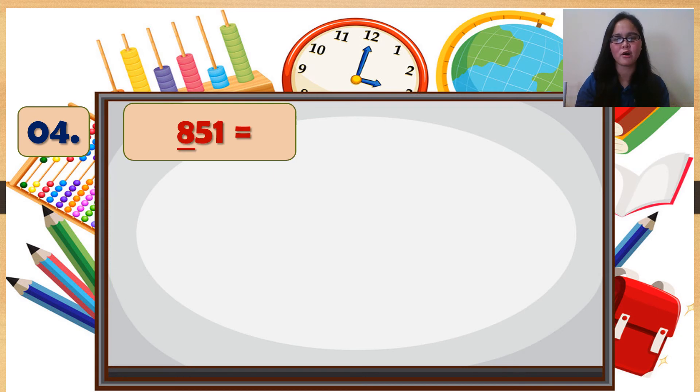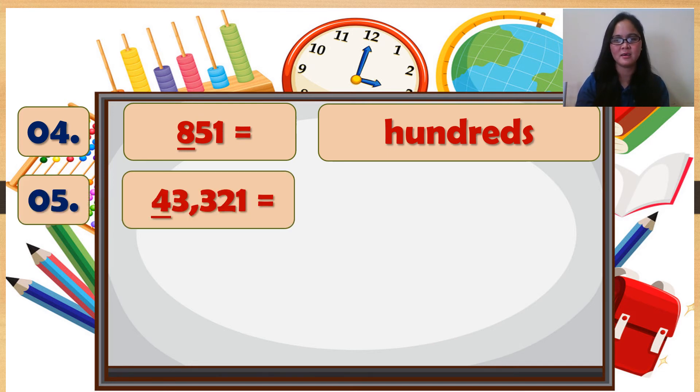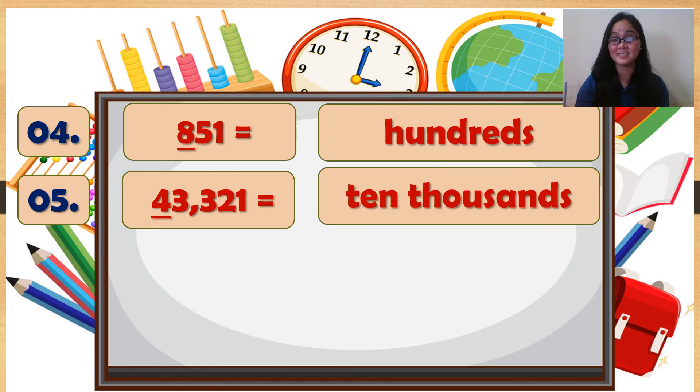Number 4: 851. 8 is... it's hundreds. Number 5: 43,321. 4 is... it's ten thousands.